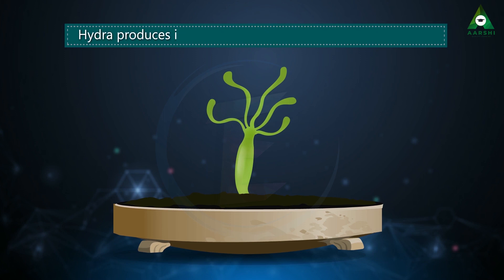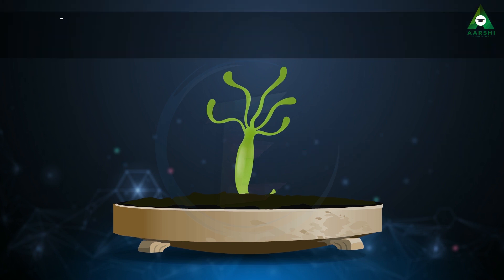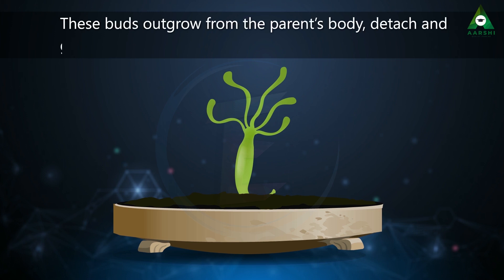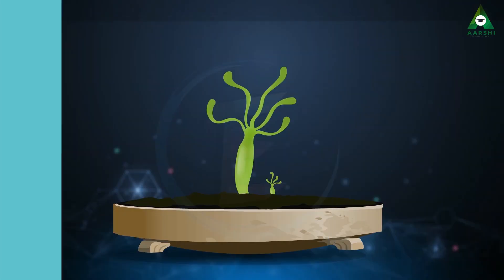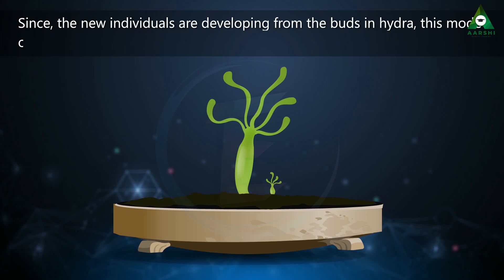Hydra produces its offspring through the process of budding. There may be one or more bulges in each hydra, which are called buds. These buds outgrow from the parent's body, detach, and grow as a new individual. Since the new individuals are developing from the buds in hydra, this mode of asexual reproduction is called budding.